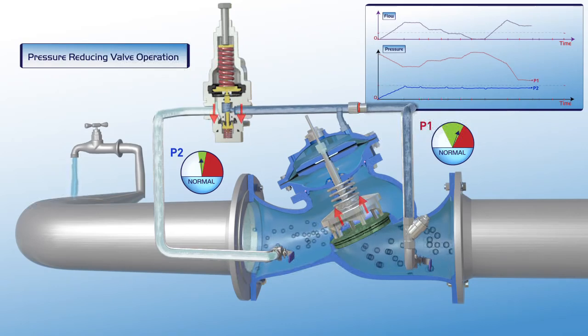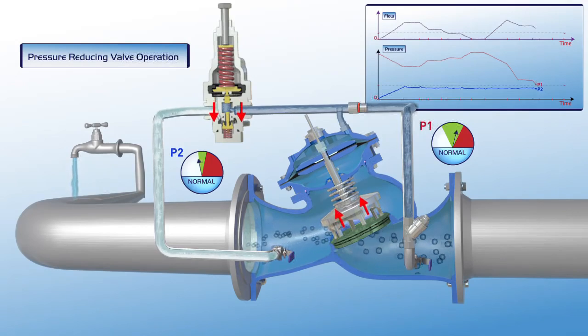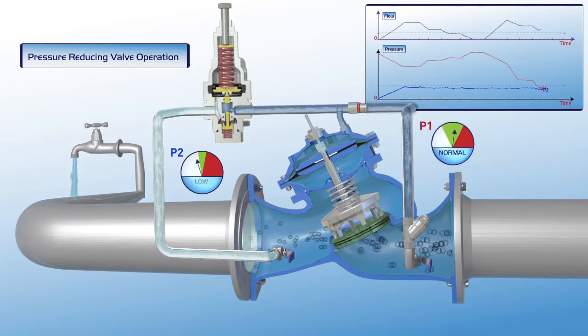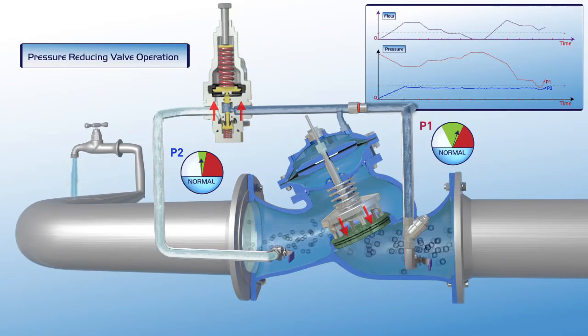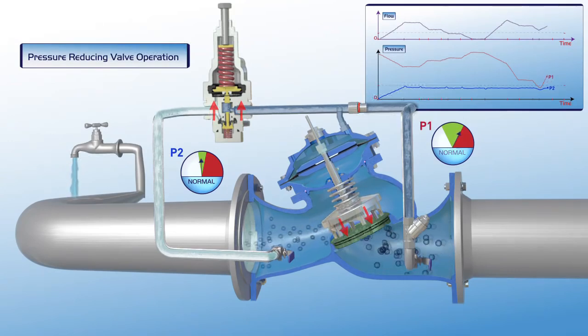In the event of a major drop in upstream pressure, the valve opens fully in order to supply the maximum possible pressure to the consumer pipeline. In this way, the valve ensures continuous water supply, even if pressure is below the desired level.